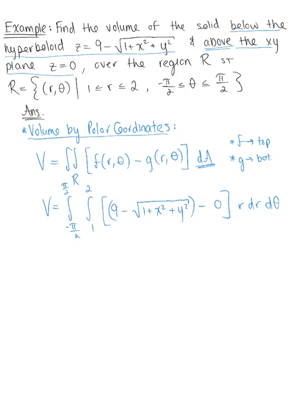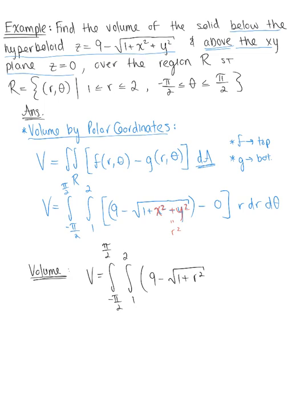We need to simplify the integrand and also notice that we have x squared plus y squared in Cartesian coordinates, so we need to replace that with its equivalent r squared. The simplified volume integral becomes V equals the integral from negative π/2 to positive π/2, the integral from 1 to 2, of 9 minus the square root of 1 plus r squared, times r dr dθ.